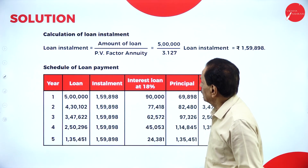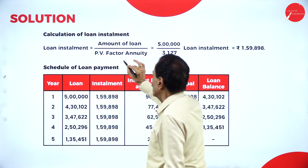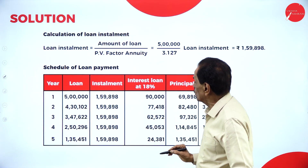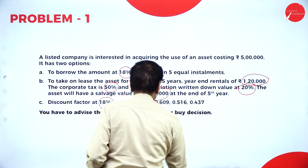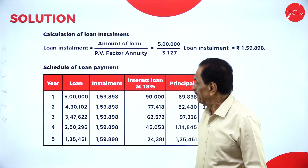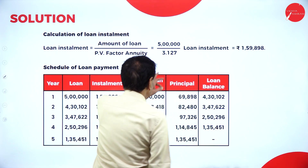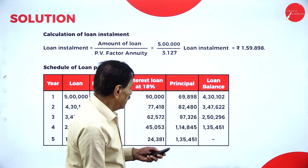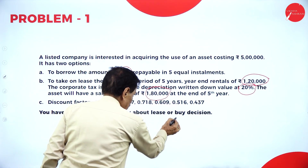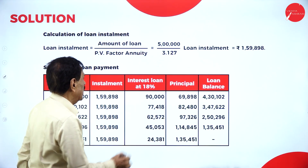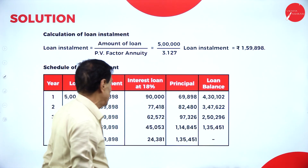Steps to be followed. First, calculation of the loan installment. Loan installment equals the loan amount divided by the PV factor. If we add all the discount factors — 0.847, 0.718, 0.609, 0.516, 0.437 — they come to 3.127. So dividing 5,00,000 by 3.127, the installment comes to 1,59,898.